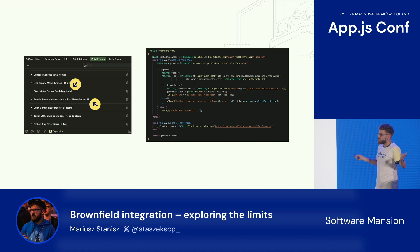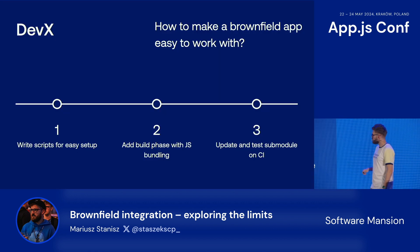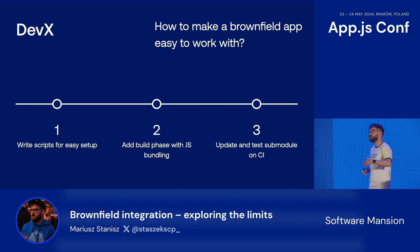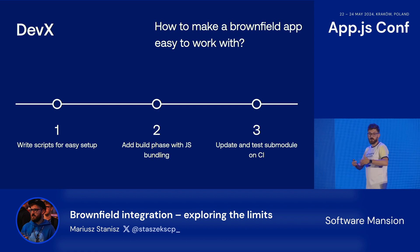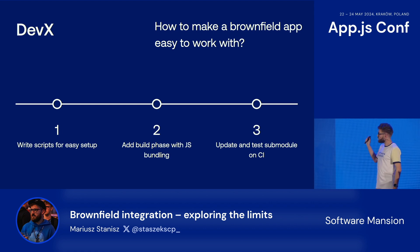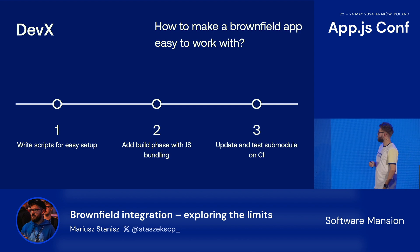Third tip: update and test the submodule on CI. It's very helpful because you can check if the app builds correctly and easily locate problematic places. If there are errors, they're probably related to native libraries you may have bumped or native code you added. It's good to do it on CI so you don't have to build the app all the time on your local machine.